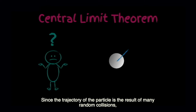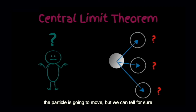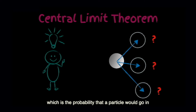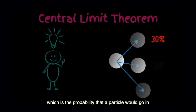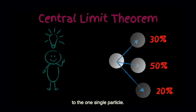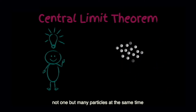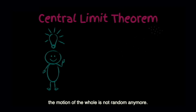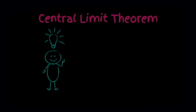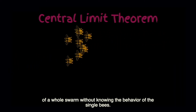What does this mean in practice? Since the trajectory of the particle is the result of many random collisions, we might not be able to say where exactly the particle is going to move, but we can tell for sure the probability that a particle would go in one direction or another. We still cannot be 100% sure about one single particle, but if we consider not one but many particles at the same time, the motion of the whole is not random anymore — more or less the same way we could describe the movement of a whole swarm without knowing the behavior of the single bees.